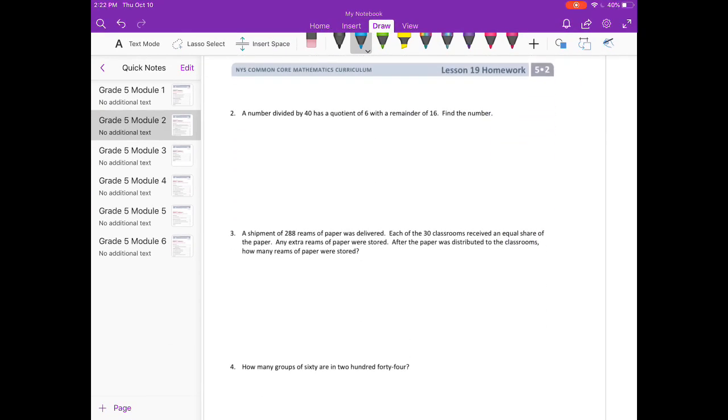Number 2. A number divided by 40. So something divided by 40 has a quotient. Quotient is the answer to a division problem of 6 remainder 16. Find the number. So we can do this using the check method. So I can do 40 times 6 is equal to 240. And then our remainder was 16, so we just need to add that on to the end. And we get 256.